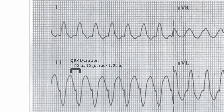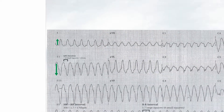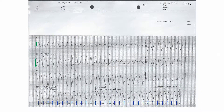The axis is widely left axis deviated, with a completely positive complex in lead 1 and a completely negative complex in lead 2. There are no obvious P-waves present, and therefore it's impossible to comment on the P-waves themselves or the PR interval.